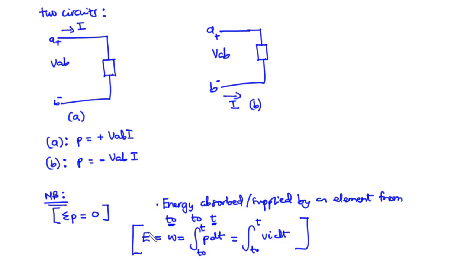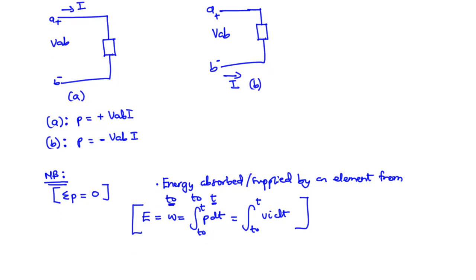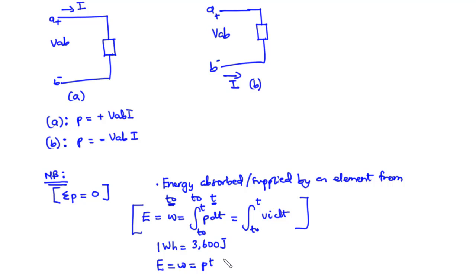Energy is defined as the ability or the capacity to do work. The electric utility company measures energy in terms of watt-hour, where 1 watt-hour is equal to 3600 joules. The formula is E equals power times time, with the unit being watt-hour. Now let's move on and consider a few questions.